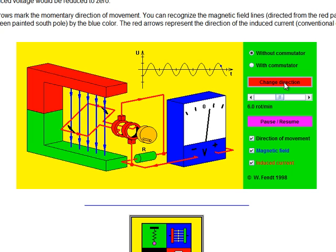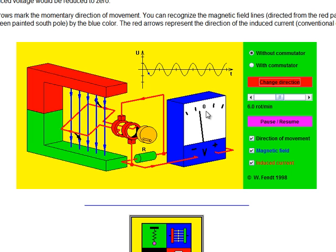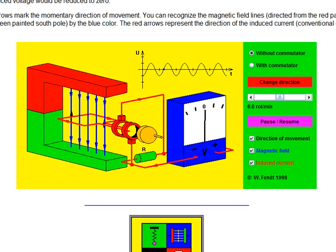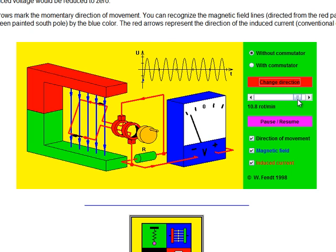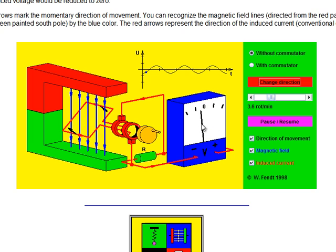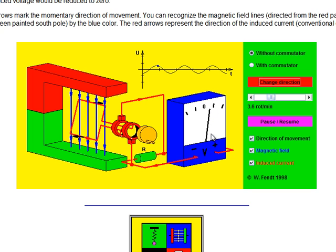What happens if we change its direction? If it's going one way and we change direction, instantly we get the EMF flip from negative to positive. So the direction of motion changes the direction of the induced EMF. What will happen to the induced EMF if we speed up the rotation? If we go twice as fast, we would expect twice the induced EMF. If we go half as fast, we get only a proportional fraction of the induced EMF.